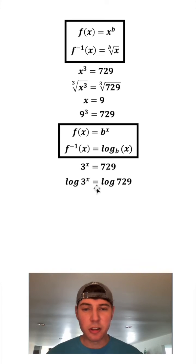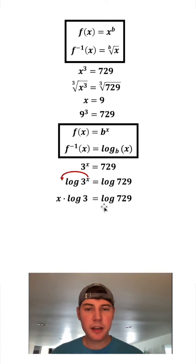When you take the log of a number, if it has an exponent, you can bring whatever's in the exponent out front and multiply it by the log. So we can bring this x out front and then multiply it by the log 3, and then that's still equal to log 729. The log 3 and log 729 are just numbers.